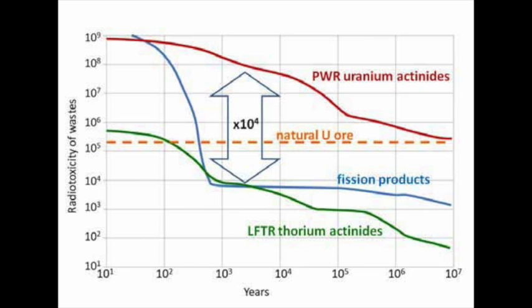In a molten salt reactor, the fuel is continuously added and waste removed through the chemical plant, allowing a much higher percentage of fissile material to be used. This process outputs waste with comparatively short half-lives of around 300 years rather than the thousands of years current nuclear waste takes to decay.